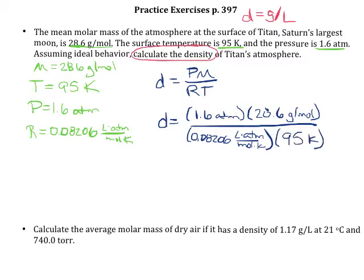Making sure units cancel. There's the atmospheres. There's our per mole. There's our Kelvin. We're going to be left with units of grams per liter, which makes sense for density. So plugging that into your calculator, you should get a density rounded to two significant figures of 5.9 grams per liter.